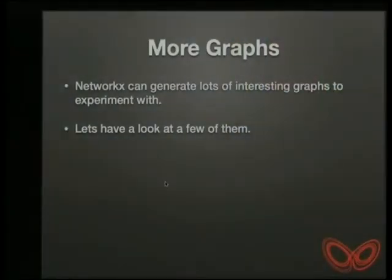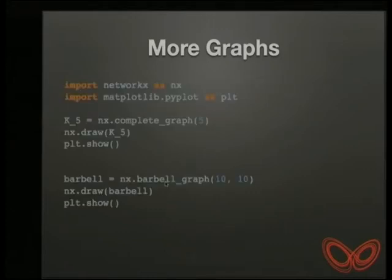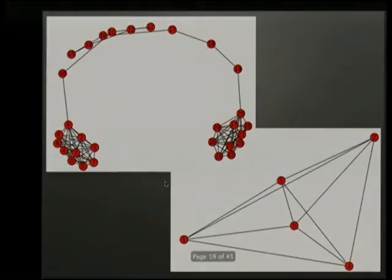I'd like to take you through some of the graphs that NetworkX can produce to give you a sense of its versatility. We'll start with two: you can do complete graphs — which have a connection from every node to every other node — and barbell graphs, which look a little bit like a barbell. You can see the beauty of the layout engine at the top of that barbell graph where it's decided they should all cross over rather than just have a straight line.